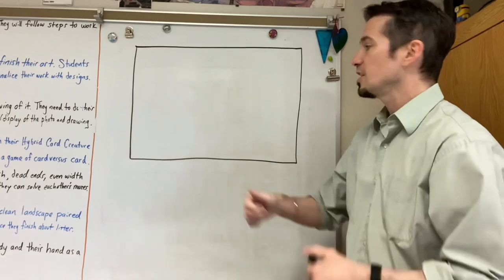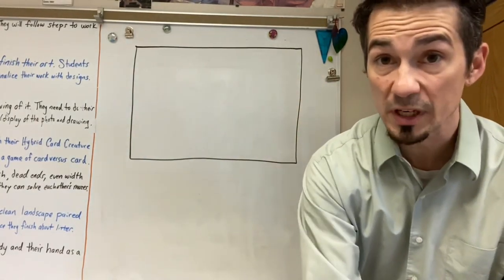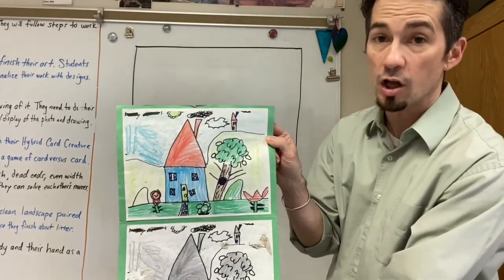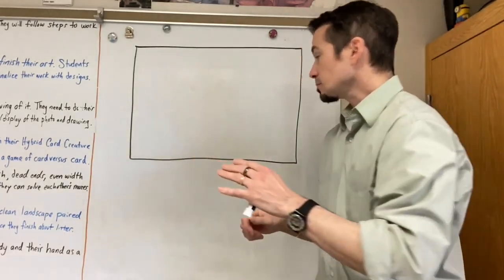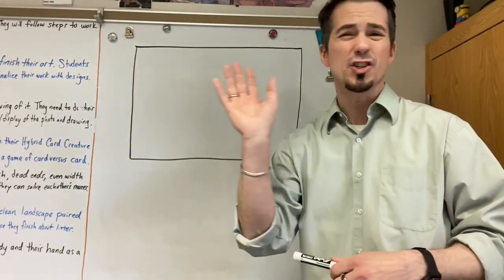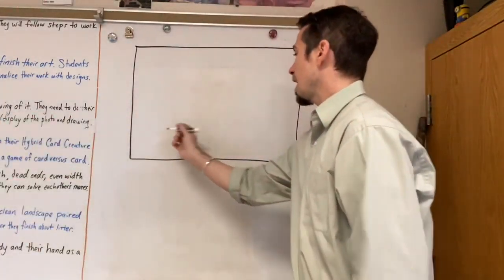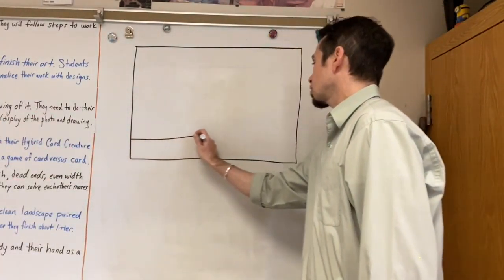But I need you kids to draw your landscape today and color it. Color it realistically. Try to color it in all the way. And then I'll have a chance to photocopy it. So for your landscape, here's your quick demonstration. Just watch, and then you can draw after. I'm setting up foreground. Foreground is closer to you. So I'm going to set my ground up across the bottom.